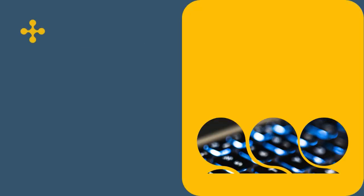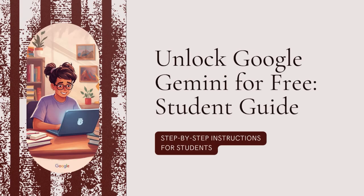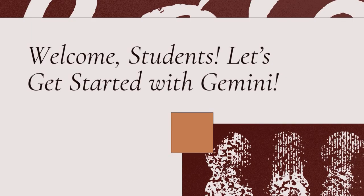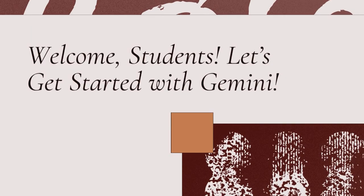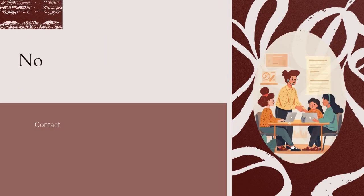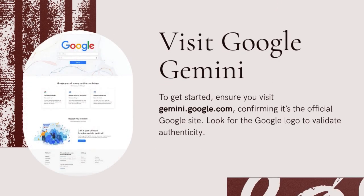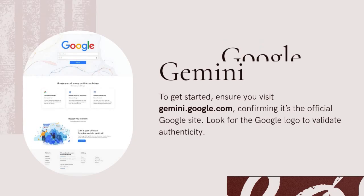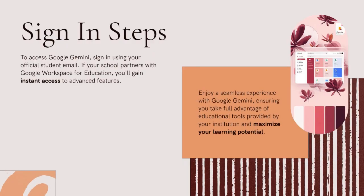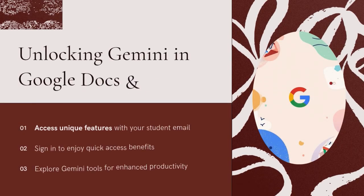Now let's walk through how to actually claim Gemini for free as a student, step by step so you don't miss a thing. You'll need a student email address officially issued by your school, college, or university. This is super important because Google uses this to verify that you're currently enrolled. In most cases, the email ends with something like .edu, .ac, or it might even be a custom domain your university uses — for example, yourname@universityname.edu. If you don't have one yet, check your school's IT department or student portal. They can usually issue or reactivate your official email in just a few minutes.